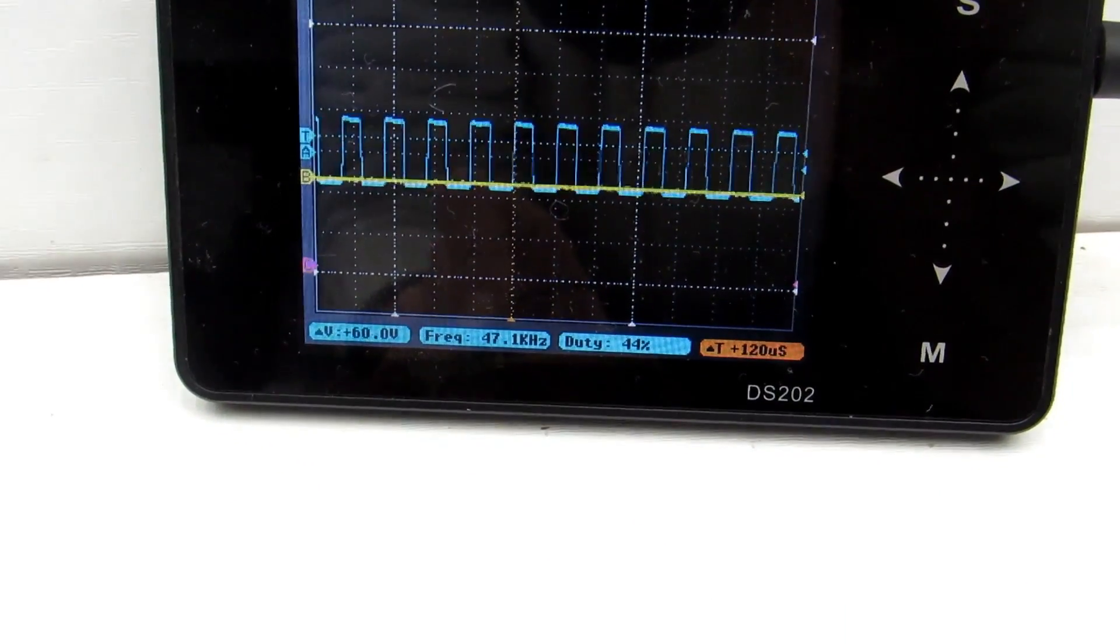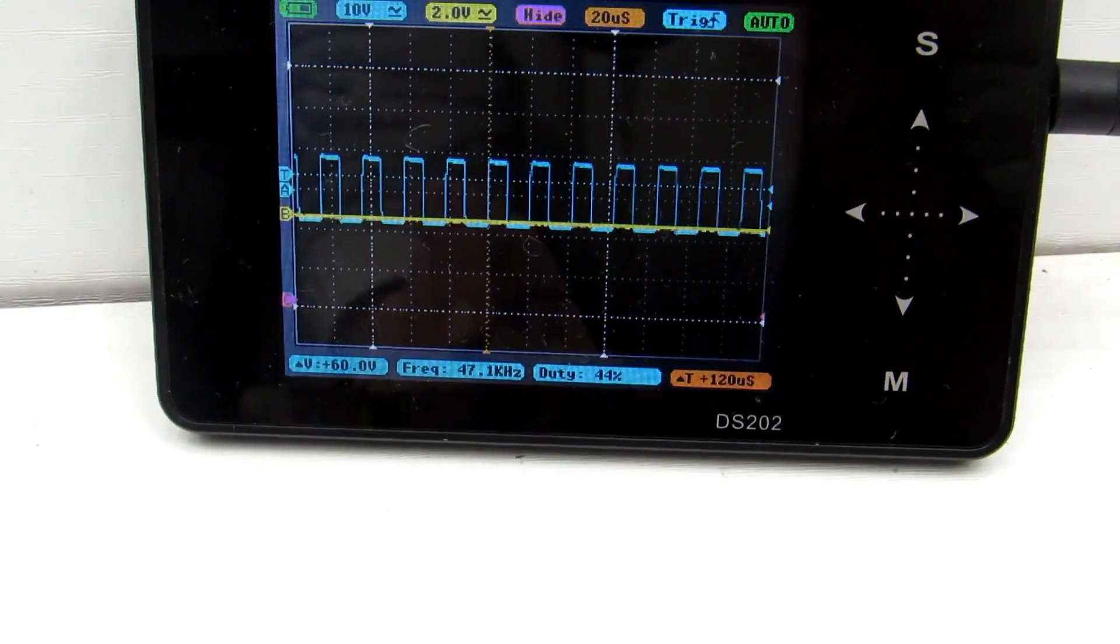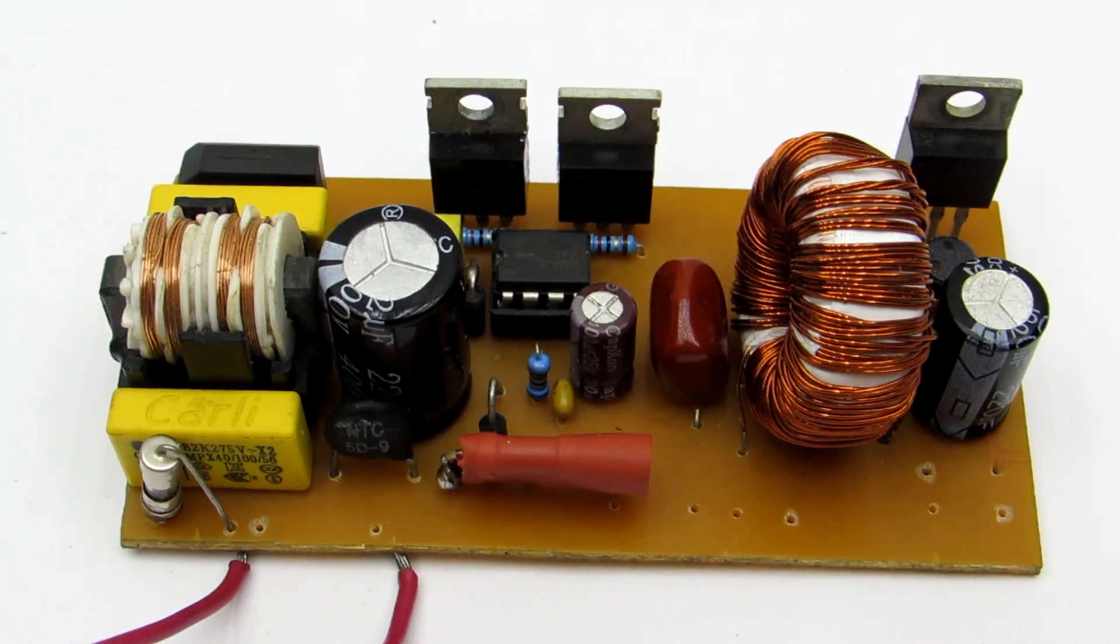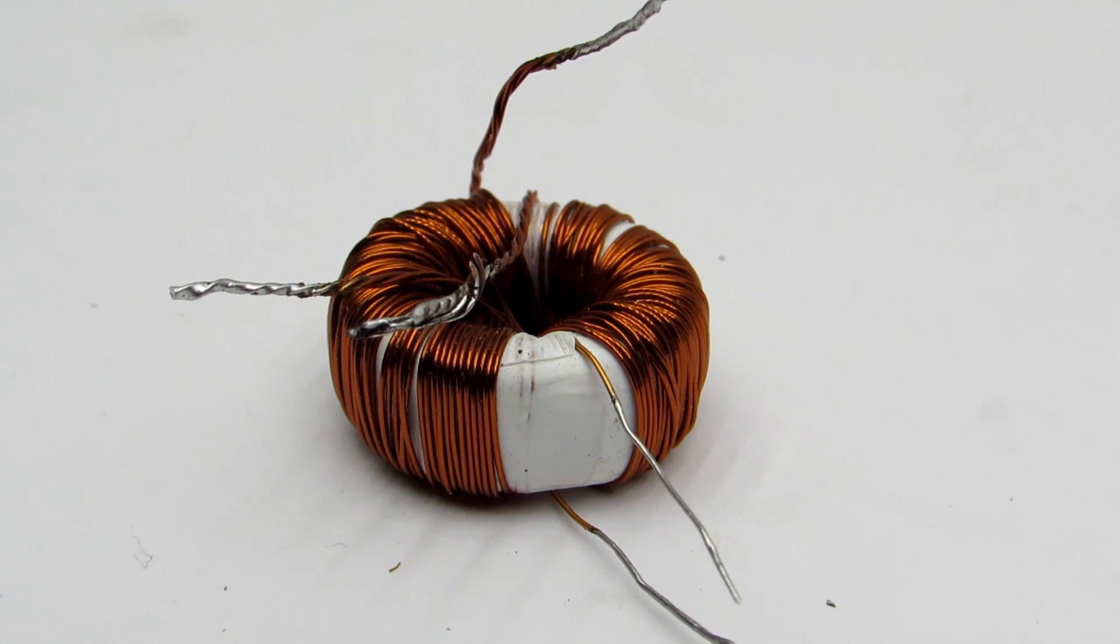The operating frequency of the generator with such components of frequency control circuit is about 45 to 47 kHz. The transformer is working well, it is not heated.